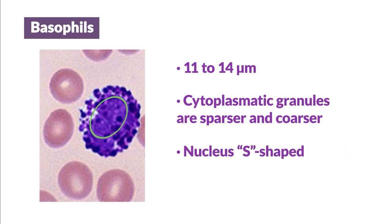Their nucleus is usually S-shaped and they are the least abundant of all leukocytes, accounting for between 0 and 1% of the leukocyte formula.